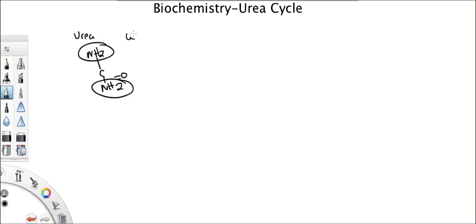Now, where is it made? What organ? The liver. Now once urea is made in the liver, where does it go? It goes into the blood, the bloodstream. Where does it go from there? Kidneys. And it gets urinated out.